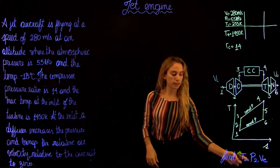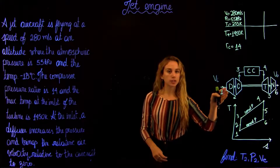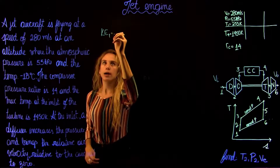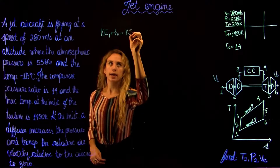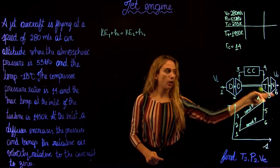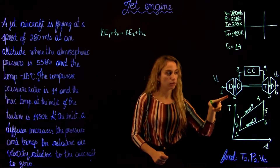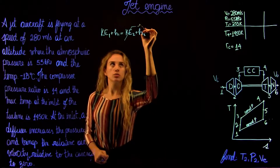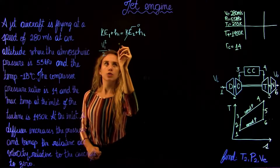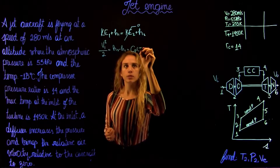To solve for the temperature at state 2 after the diffuser, we write the energy equation for the diffuser: the kinetic energy at 1 plus the enthalpy at 1 equals the kinetic energy at 2 plus enthalpy at 2. Since kinetic energy can be neglected everywhere except at the diffuser inlet and nozzle outlet, the kinetic energy at 2 is zero. So we solve: V1²/2 = H2 − H1.